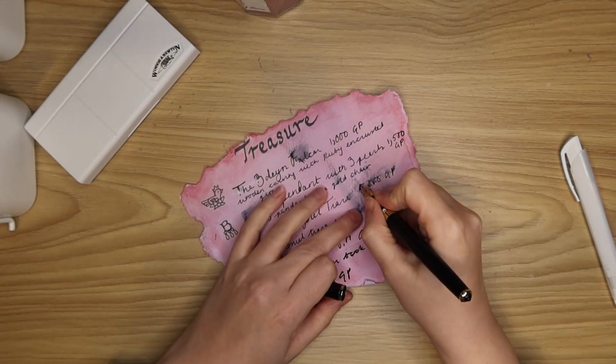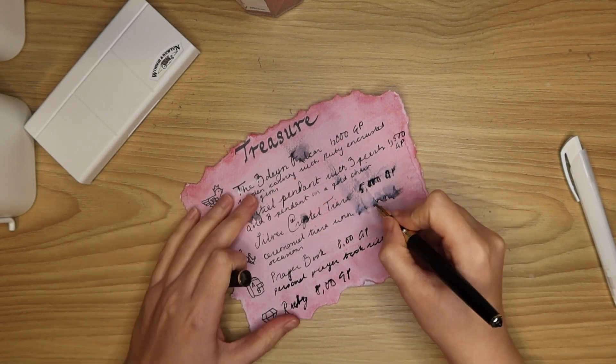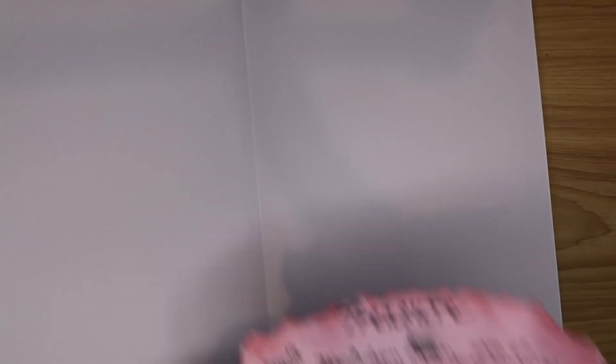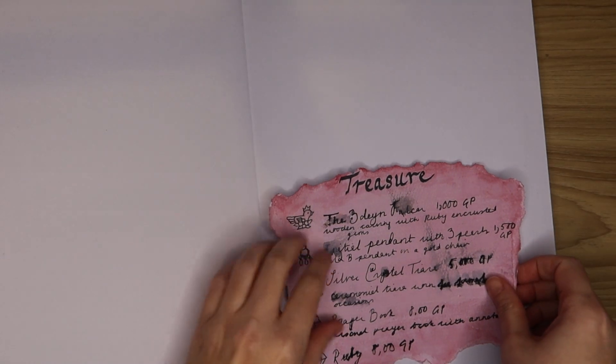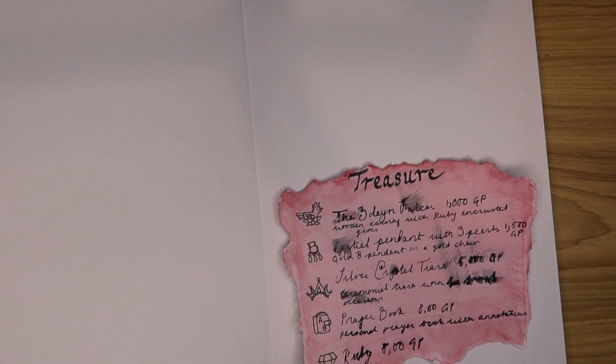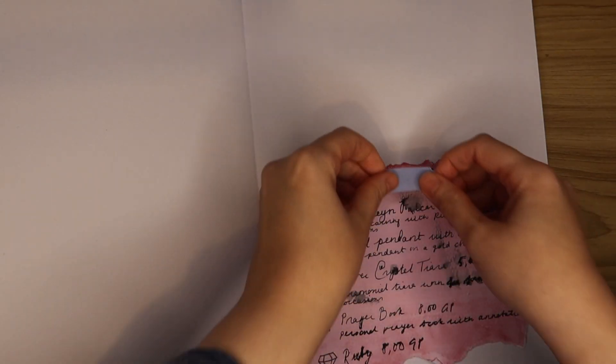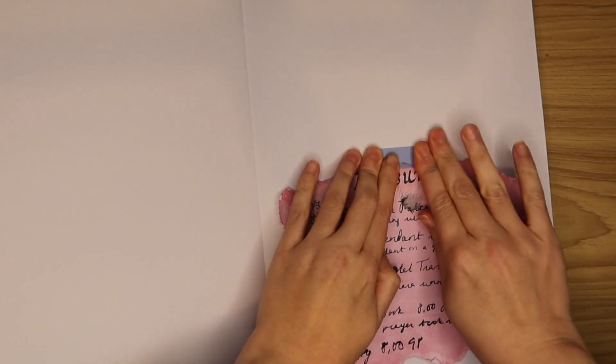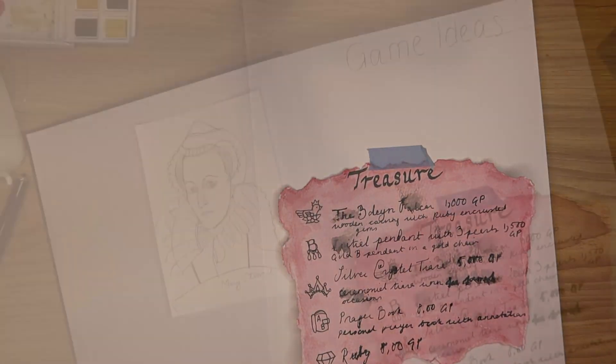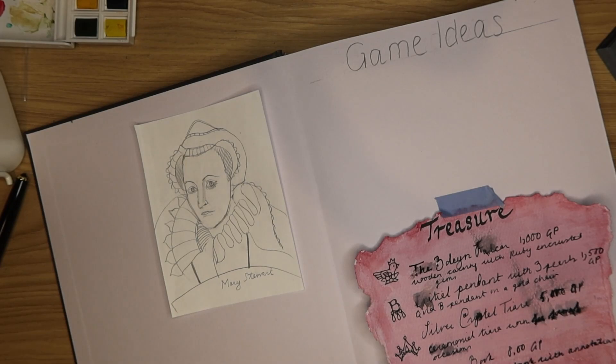To keep all of my ideas together I'm going to keep a game planning journal. First I'm going to stick down my pink parchment of treasure so I can see what I've created so far. On the other side goes the portrait of Mary Queen of Scots. I still want to keep her in this journal as later on I can create a different one shot based on her too.